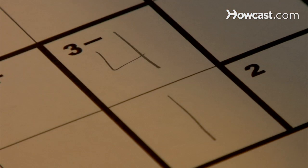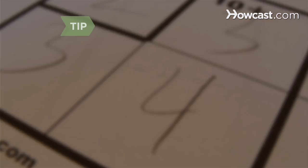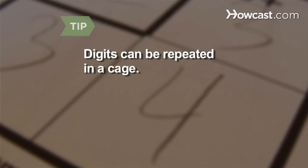Step 6. Identify cages where only one combination of numbers will work, and fill that combination in. Digits can be repeated in a cage as long as they do not repeat in a row or column.